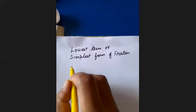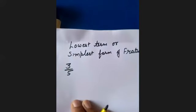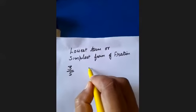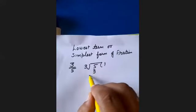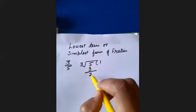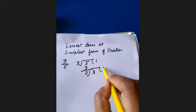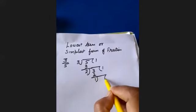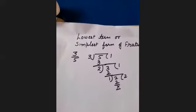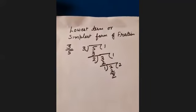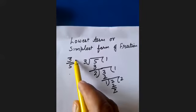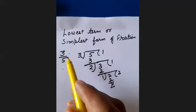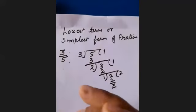For example, we have a fraction number 3 upon 5. Now find its HCF by long division method. 5 divided by 3 gives remainder 2, then 3 divided by 2 gives remainder 1, and HCF is 1. So it means 3 upon 5 is in simplest form, because if the HCF of numerator and denominator is 1, we can say our fraction number is in its simplest form or lowest term.